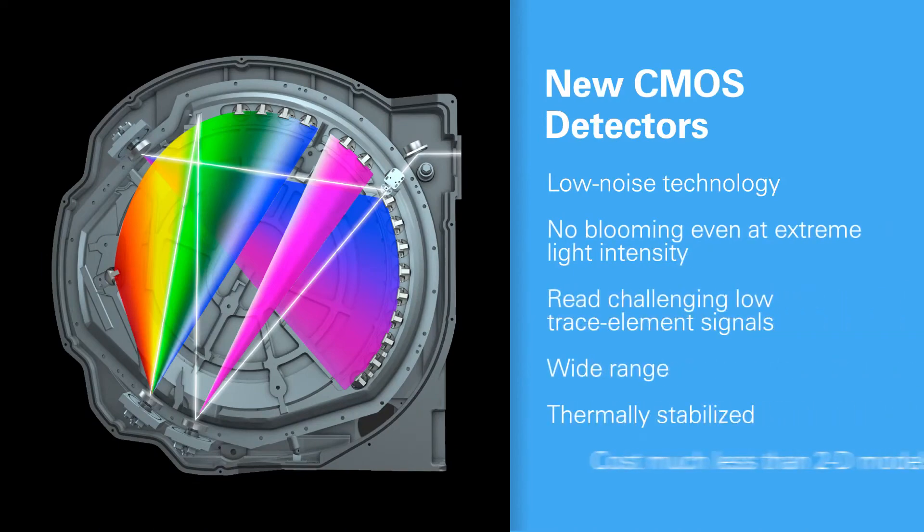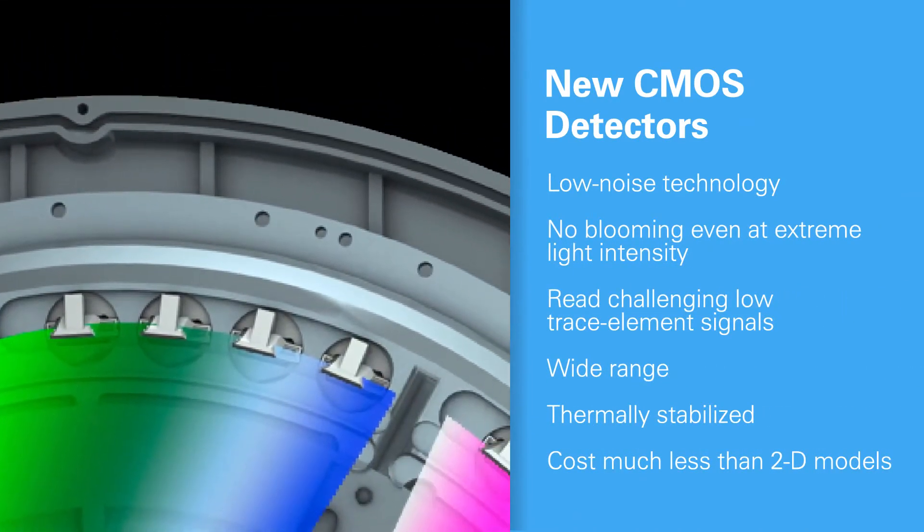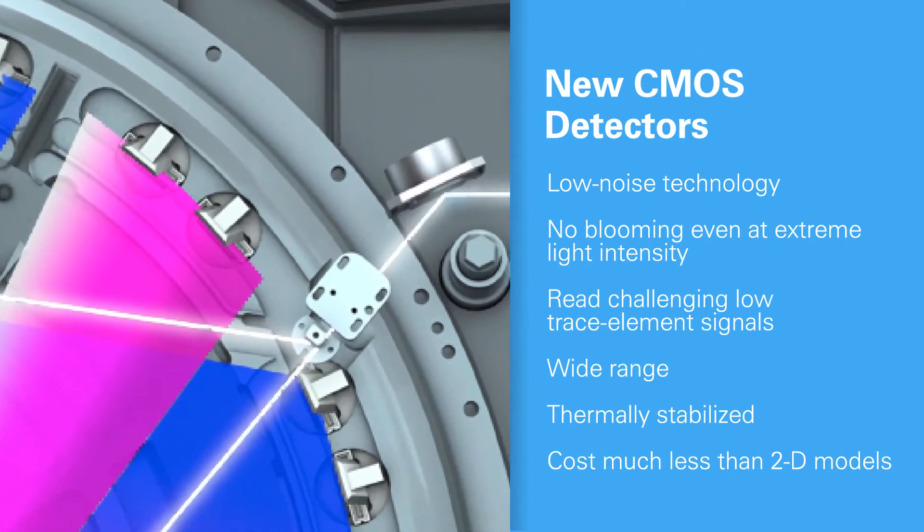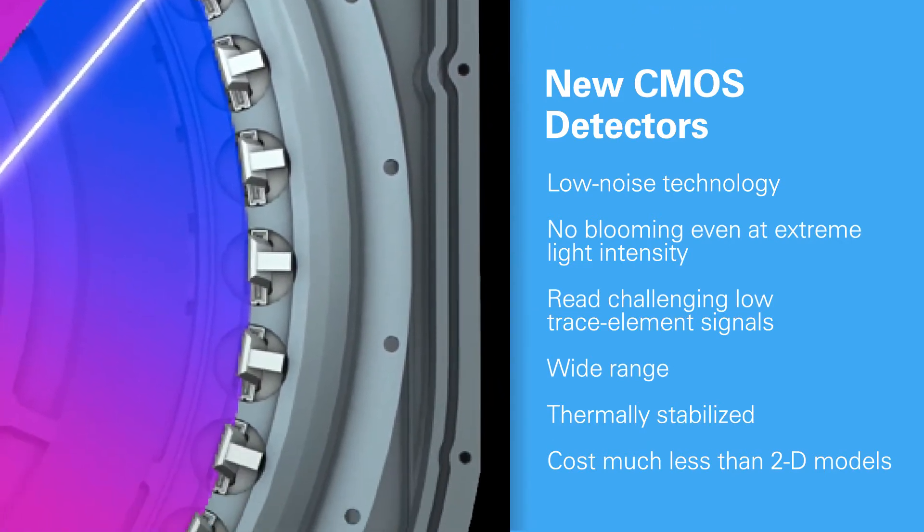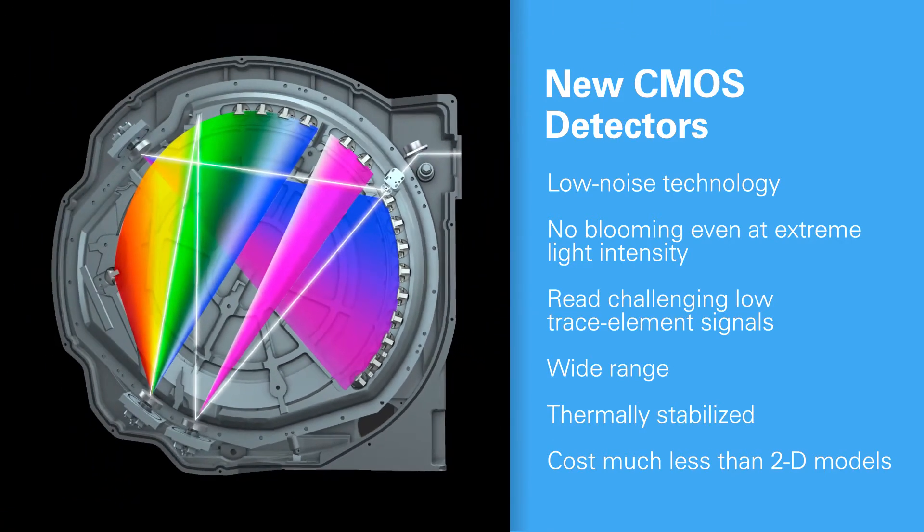Optics are not the only new SpectroArcos add-ons. The system now features proven CMOS detectors. Among other advantages, they eliminate blooming, read trace elements, add spectral range, and lower costs.